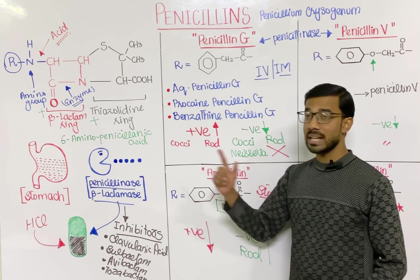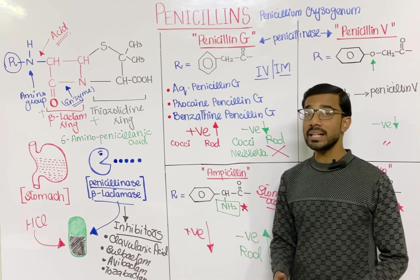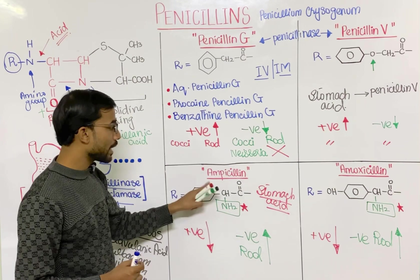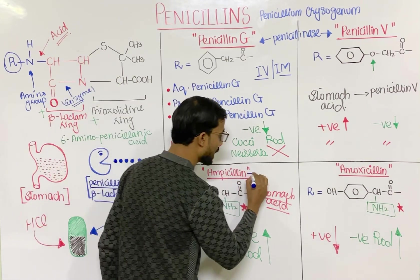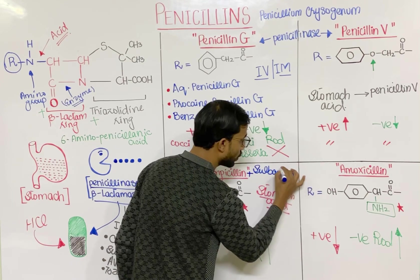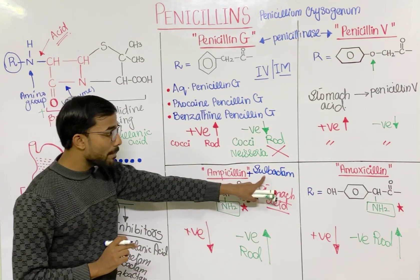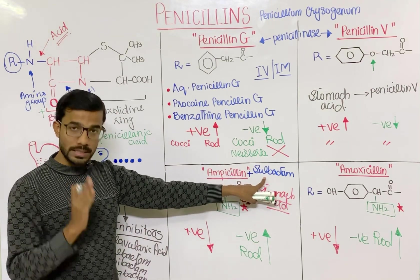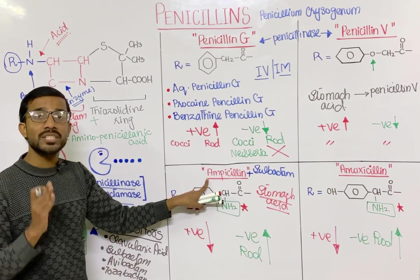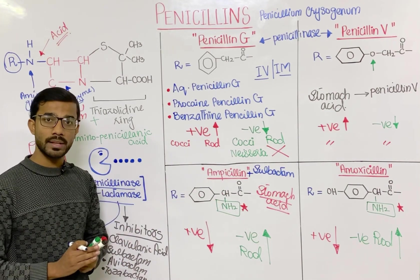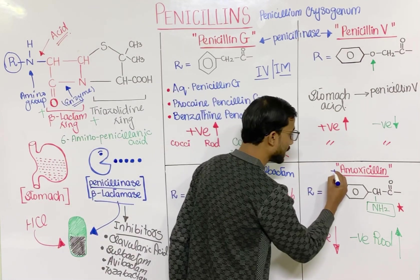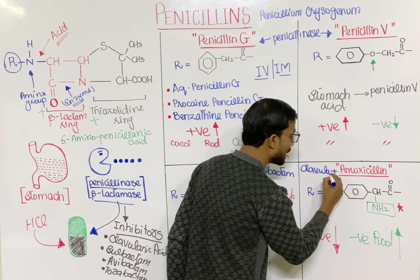When this enzyme is inhibited, ampicillin and amoxicillin can easily do their work. For example, if we add sulbactam to ampicillin, sulbactam will inhibit the enzyme, and after inhibition, ampicillin can easily do its work. Similarly, for amoxicillin, we add clavulanic acid.